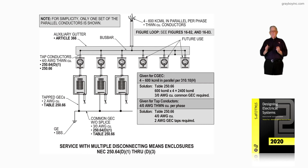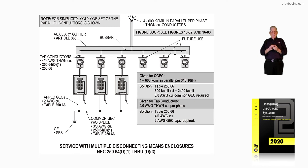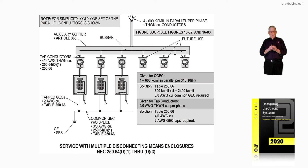That is what the called-out information in the boxed-in section provides. Always be sure when reviewing the illustrations that you look at the notes and the figure loop. The figure loop will refer you to additional figures that provide more information, so all of this will go together and fit once you've read it all.